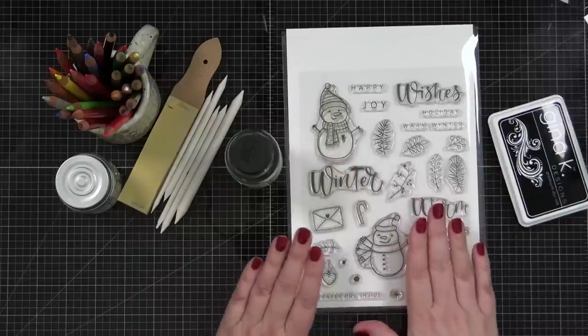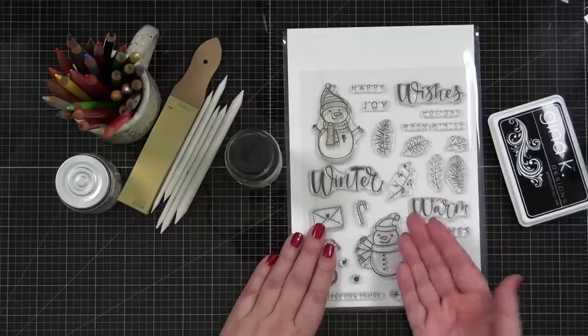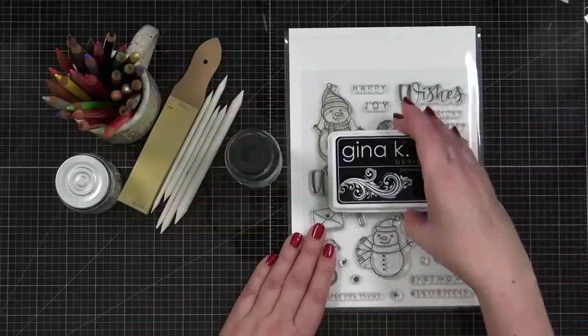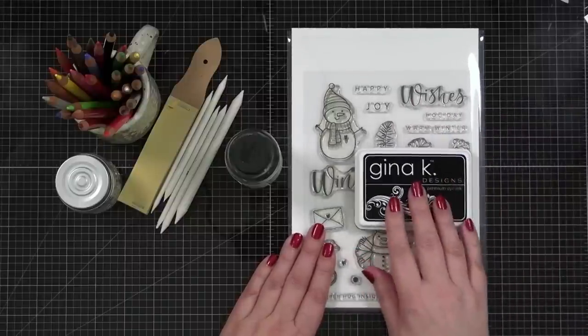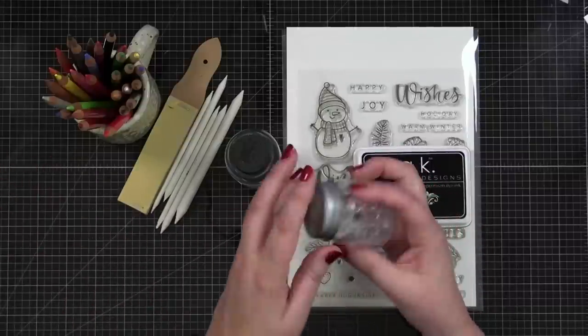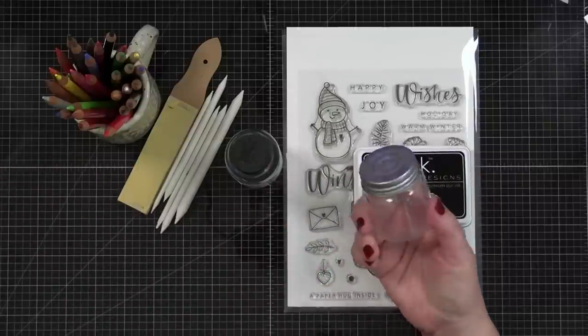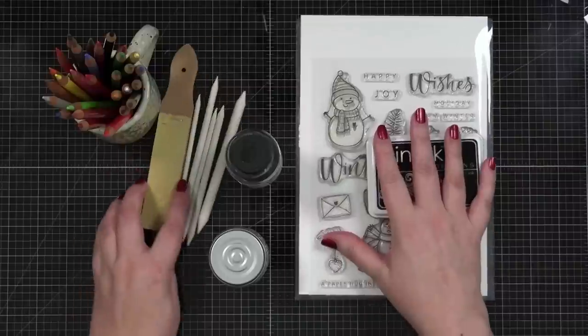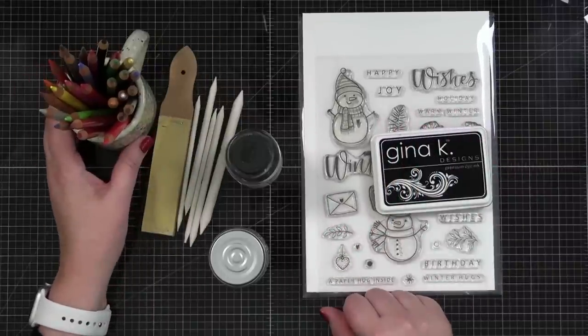I love these snowmen, and I figure if I've got simple images to color, I'm going to do better. I also have Gina's Black Onyx Ink. I have a little glass jar that I am going to pour some of my Gamsol in so it's easy to dip. You know what? We're going to see what happens.